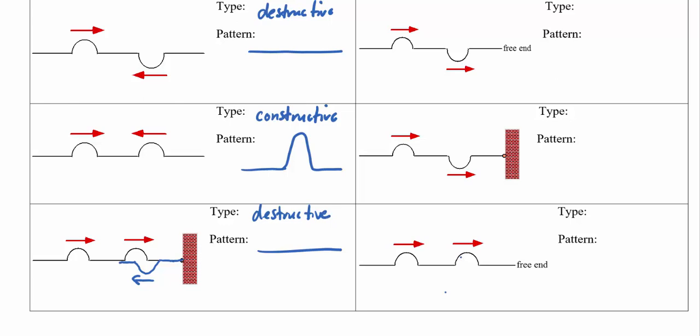What about this one here? A crest chasing this trough. When this trough bounces off the free end, it will not invert. So it's going to bounce back looking the exact same which means it's going to run into a crest which means destructive interference.